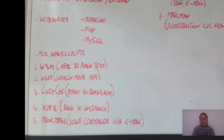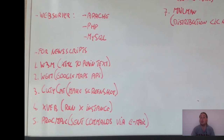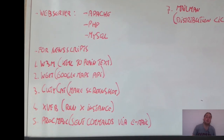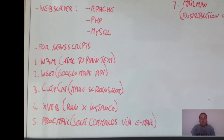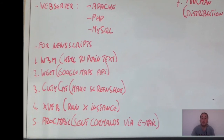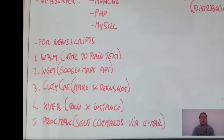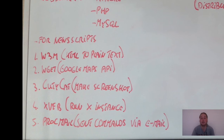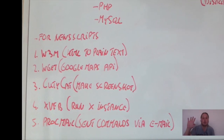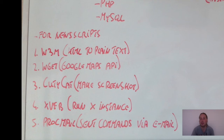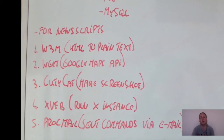wget is used to get files via HTTP, FTP, etc., and I'm using it to communicate with the Google API and get coordinates for addresses in my definitions library. The third tool is CutyCapt, a program that can be used in Unix to generate screenshots of websites.